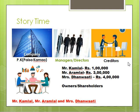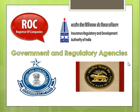So this is the basic story of who all are involved in the company. A company starts with the owners or shareholders. They appoint managers and directors to control it. Even employees are part of the business. The main stakeholders involved are creditors, managers, directors, shareholders, owners, and the government and regulatory agencies.